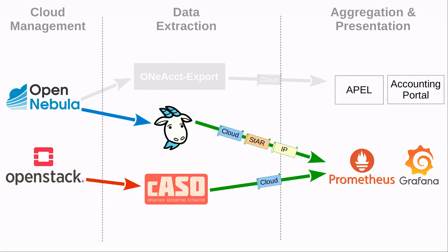Meanwhile, we replaced OpenNebula with OpenStack as the cloud manager in our own cloud at Cessnet. So we extended GOAT to also support OpenStack as the source of accounting data. This is the final setup we have, and this is also what we are going to show in this demonstration.